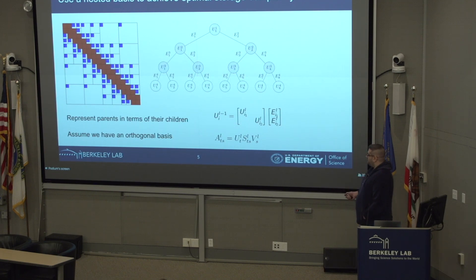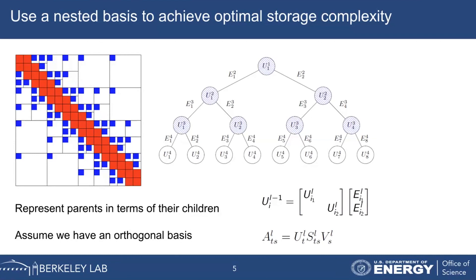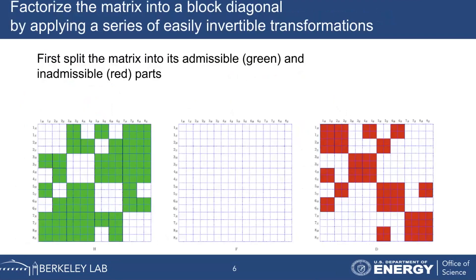I'm going to assume for the rest of the talk that the basis vectors, these U's, are orthogonal. So if we take U transpose U, we end up with an identity matrix. Now we have an H2 matrix and we'd like to be able to factorize it, or at least get an approximation of some factorization that we can use to solve systems of equations. To do that, we're going to convert our matrix into a block diagonal matrix using a series of easily invertible transformations, for example, orthogonal transformations and elementary row and column operations.